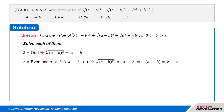Since 2 is even, and a is less than b, a minus b is less than 0. So, square root of the whole square of (a minus b) equals the absolute value of (a minus b), which equals negative of (a minus b), which equals b minus a.